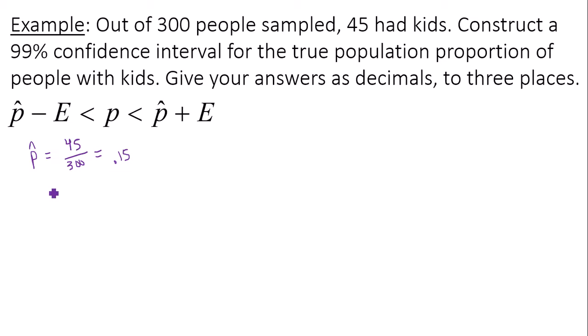Next let's talk about our error, our error bound formula. The formula for error bound is E equals the critical value z sub alpha over 2 times the square root of p hat times q hat over your sample size n.